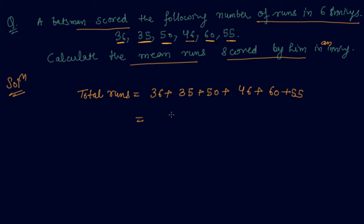You will do this addition at your end. I am writing the number as it is directly. Please do the addition at your end. So I will write: mean runs scored in an innings is total runs upon number of innings.